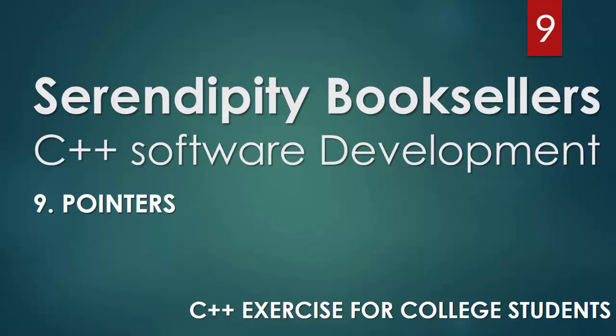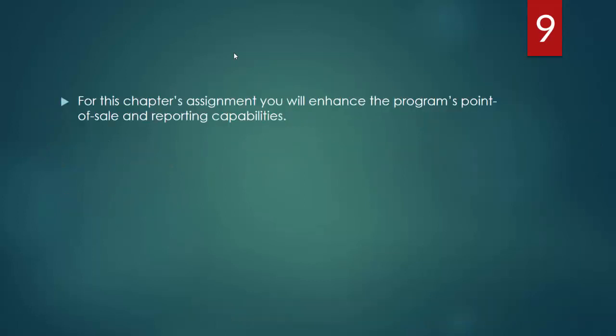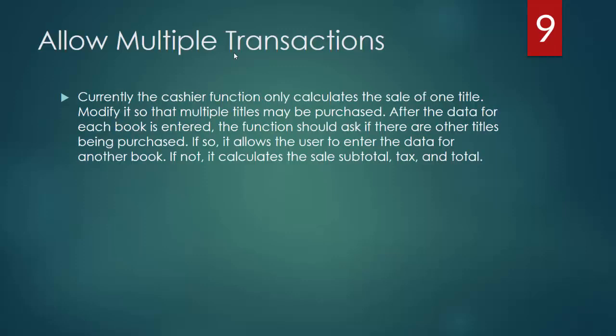Hello and welcome to chapter 9 of our Serendipity Booksellers C++ software development project. In this part we will be dealing with everyone's favorite subject in C++, and that's pointers. For this chapter's assignment we will enhance the program's point of sale and reporting capabilities. We will allow multiple transactions — currently we can add a book and process one transaction at a time, but we want to allow multiple books to be purchased instead of one at a time.